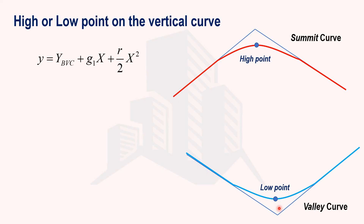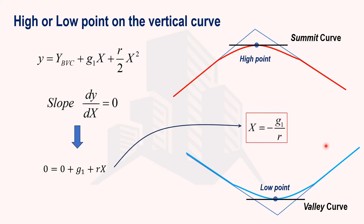To determine the high or low point, we use the general equation of the vertical curve. At the high or low point the slope is zero, so we differentiate y with respect to x and set it to zero. Differentiating the equation gives dy/dx = G1 + r·x = 0, from which x = −G1/r. This x value is the horizontal distance from BVC to the high or low point, allowing us to find its location and elevation.